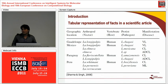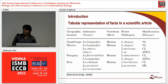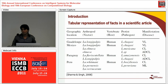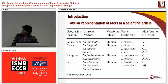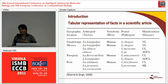Most scientific articles have tables as their principal data source. The focus of our work today is to show a little bit about how to generalize this kind of information from an ontological point of view.